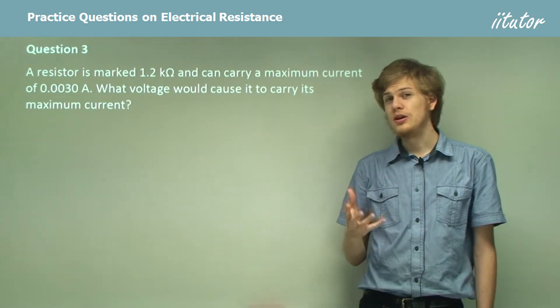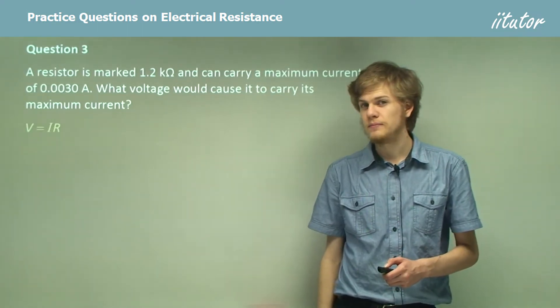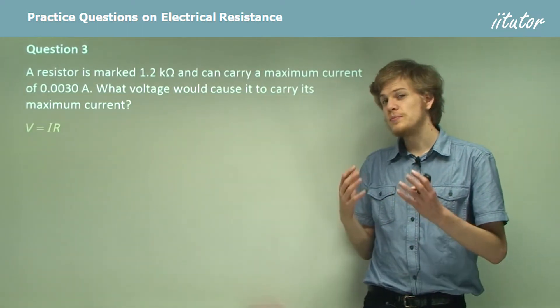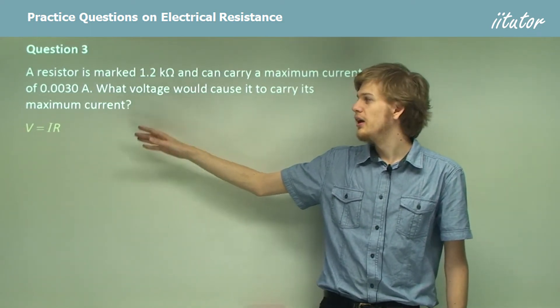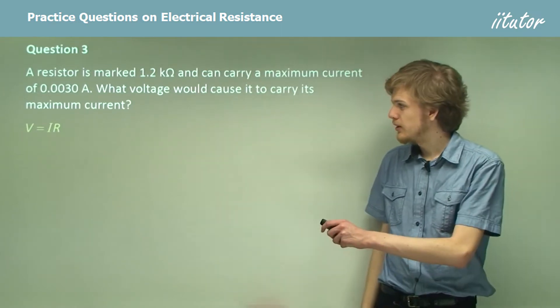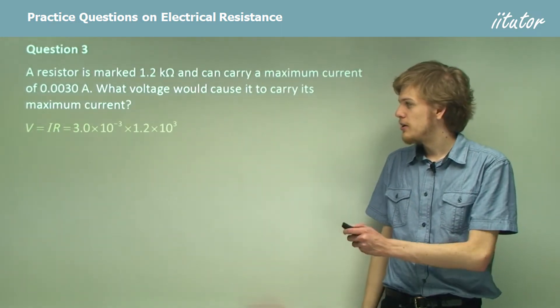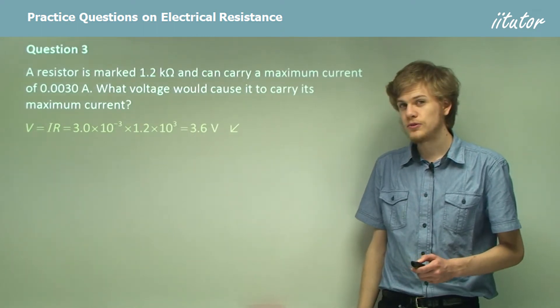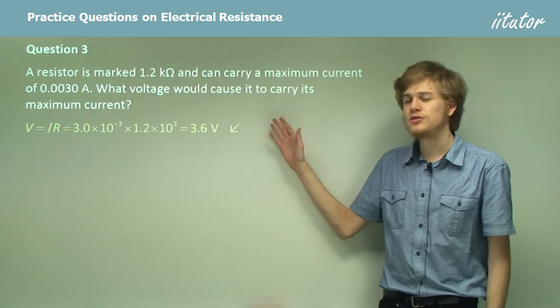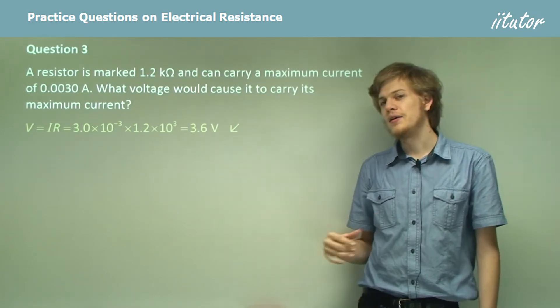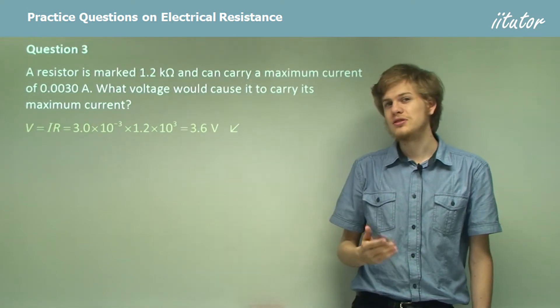So here we're trying to find V once again. So we don't need to rearrange our equation. Now in order to produce the maximum current, we need to substitute the maximum current and the resistance of the resistor into this equation. Doing that leaves us with this equation, which simplifies to 3.6 volts. So a power supply of 3.6 volts connected to just this resistor will cause it to carry its maximum current. A voltage any higher than this may damage the resistor.